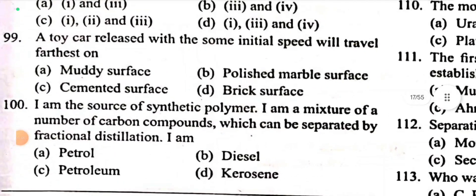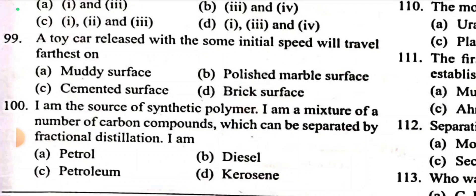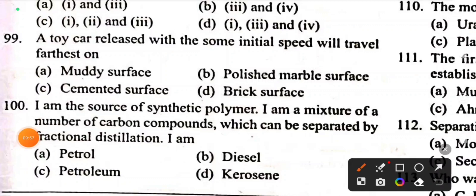Question 99: A toy car released with some initial speed will travel farthest on the smoothest surface. Polished marble surface is the smoothest. Here the friction is very less, so the toy car moves the farthest distance.